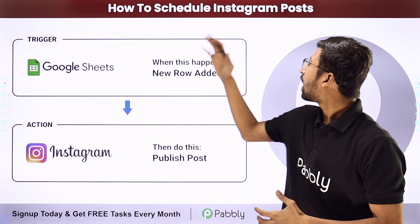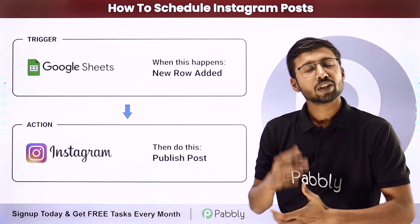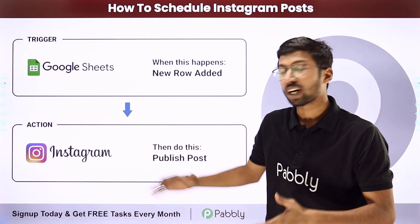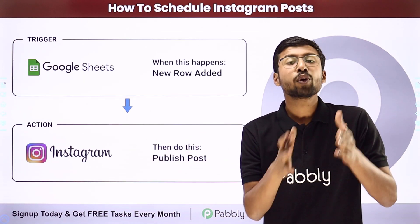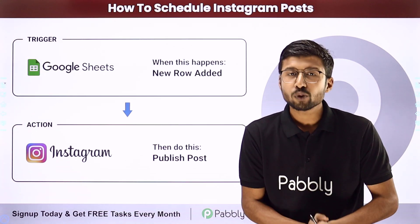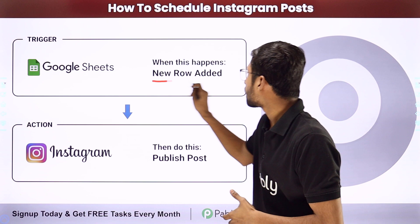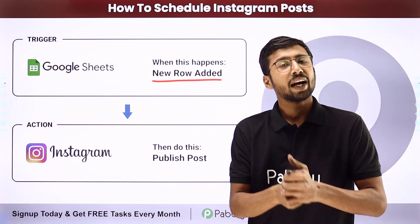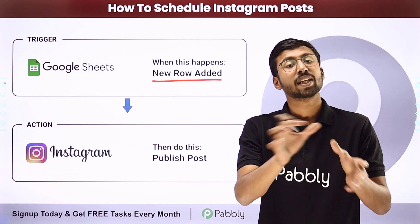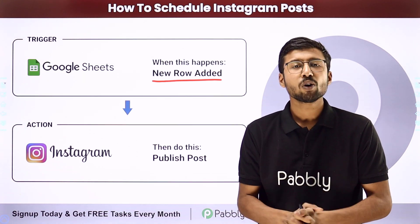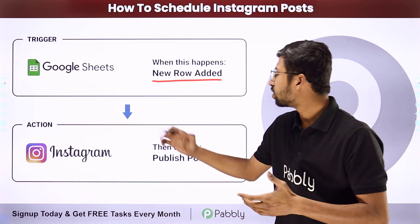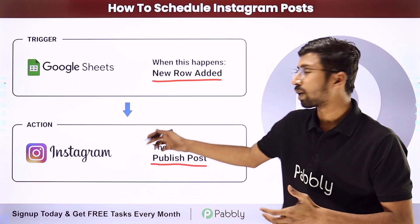In this video we are going to learn how to schedule Instagram posts. We are going to set up an automation between Google Sheets and Instagram. You just have to add the details of your Instagram post as a new row into your Google Sheet, and with the same caption, the same image URL, and the same date and time, a new post will be published on your Instagram account.